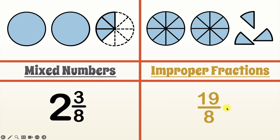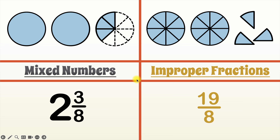Just a reminder: it's called an improper fraction because proper fractions represent a value less than one whole, while this represents a value more than one whole. You can always tell you have an improper fraction because the numerator is always bigger than the denominator. Now let's go into our first example so we can go over a step-by-step process of how to convert from improper fractions to mixed numbers.